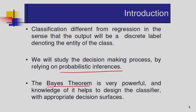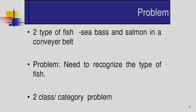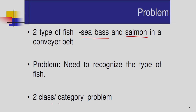In this example, if I consider a pattern classification system, I have to do the pattern classification for two types of fishes: one is sea bass and another one is salmon. So the problem is to recognize the type of fish — it is a two-class problem. I can define the classes: omega 1 represents the fish salmon and omega 2 represents sea bass.